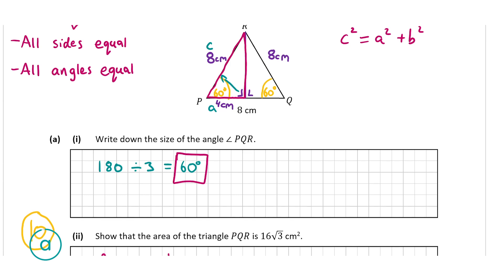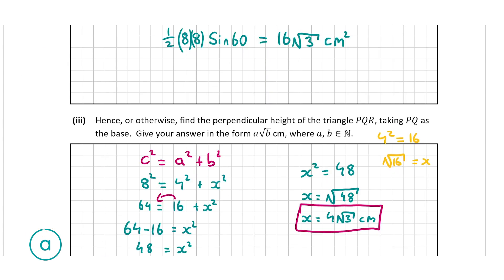So the perpendicular height is 4 root 3 centimetres — that's the length of the purple line. That's our answer for A part 3, worth 10 marks. Another way of solving that question was to use the half base times perpendicular height formula, equate it to the area from A part 2 which was 16 root 3, and then solve for the perpendicular height. But in my opinion, using Pythagoras' theorem is the most straightforward approach, and whatever method you use will get you full marks.